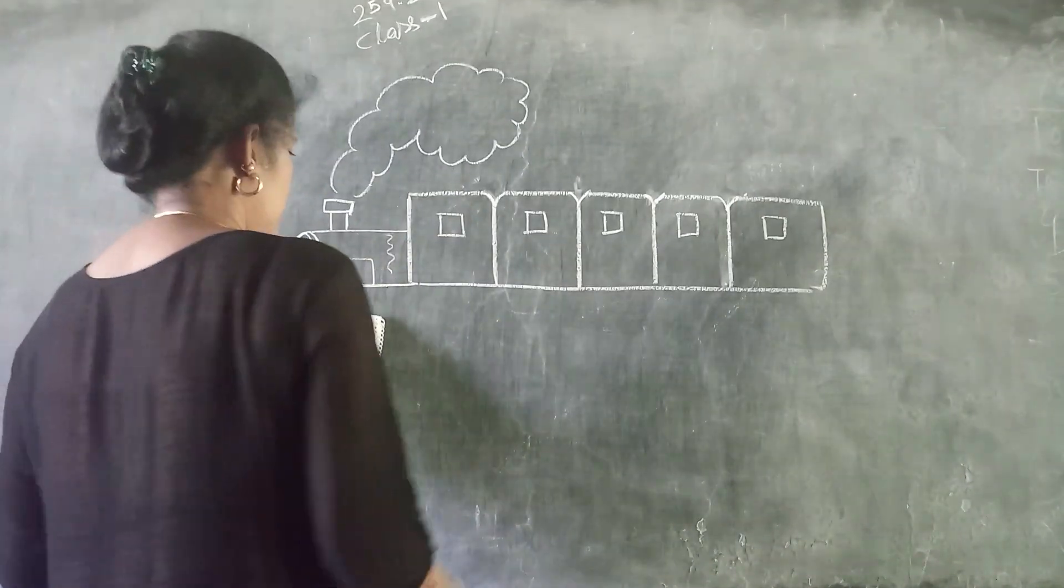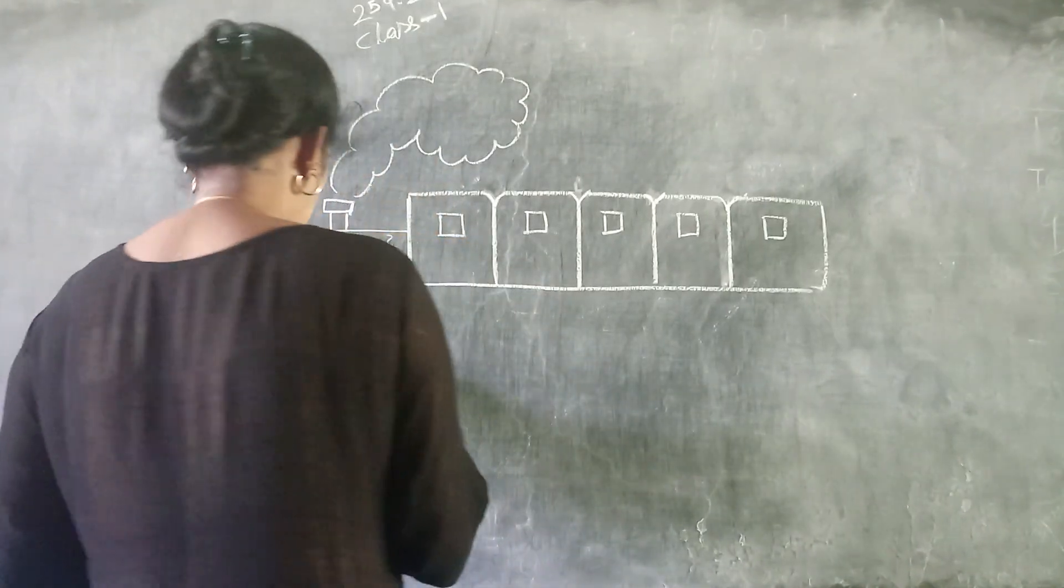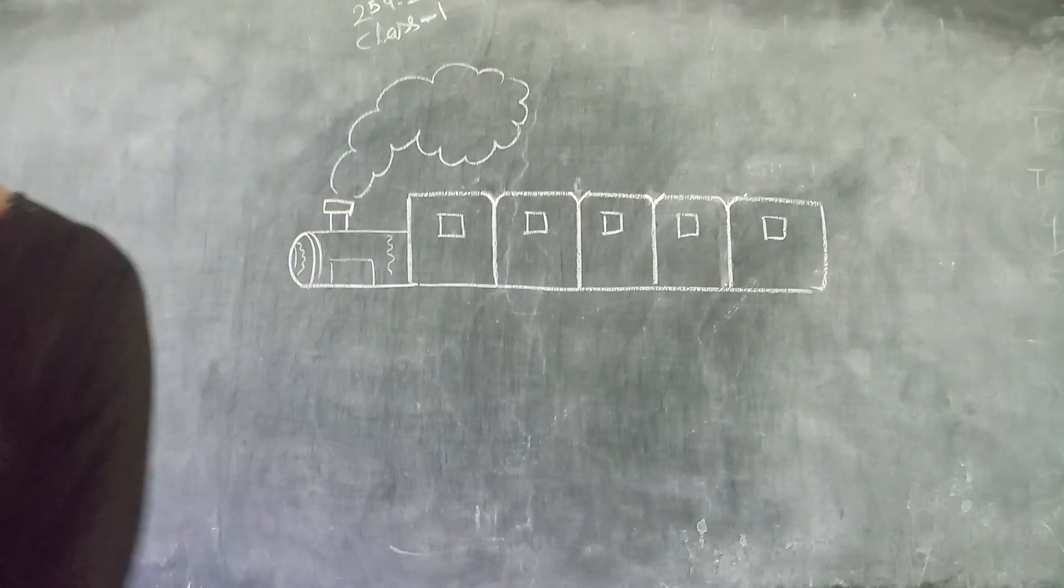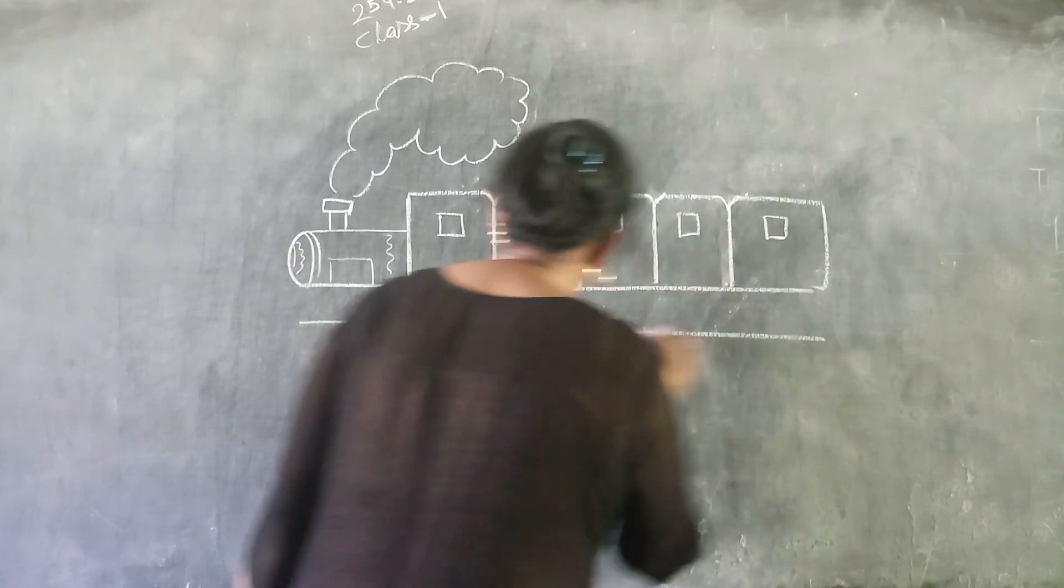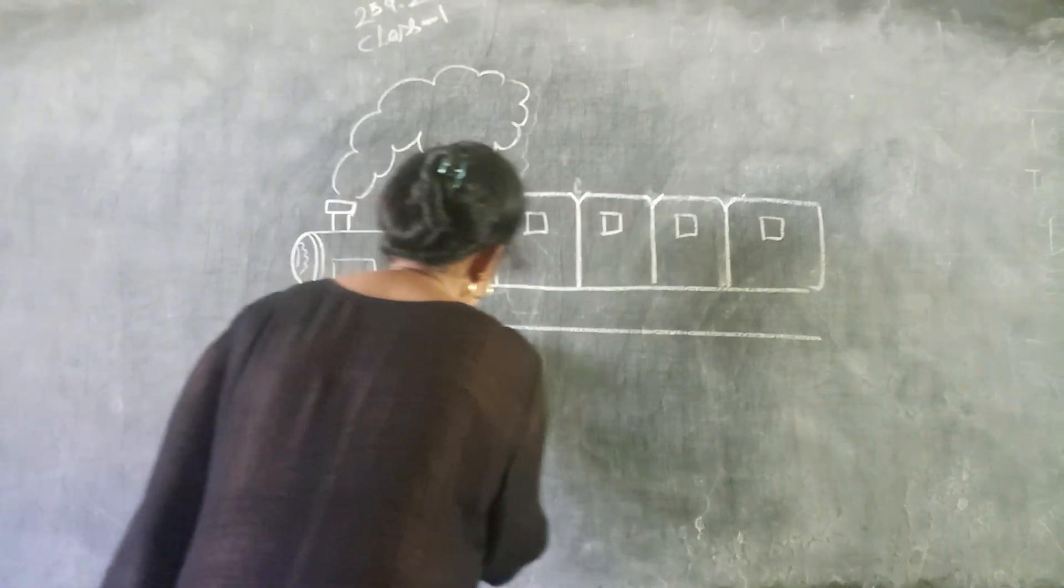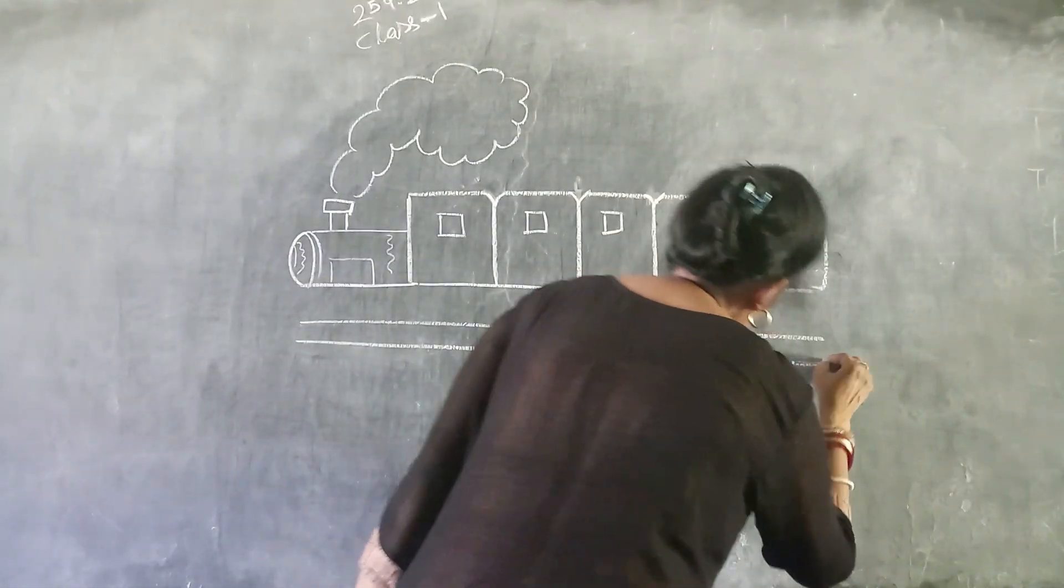Then you draw the wheels of the train. Another horizontal line. Then another one. This is the train line.